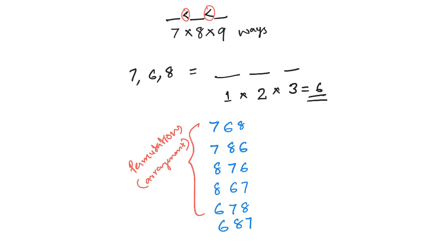For the digits 7, 6, 8: the arrangement 6-7-8 is increasing order. Others like 7-6-8 (6 less than 7), 7-8-6 (6 less than 8), 8-7-6 (6 less than 7), 8-6-7 (6 less than 8), 6-8-7 are not in increasing order. Out of 6 arrangements, only 1 is in increasing order.